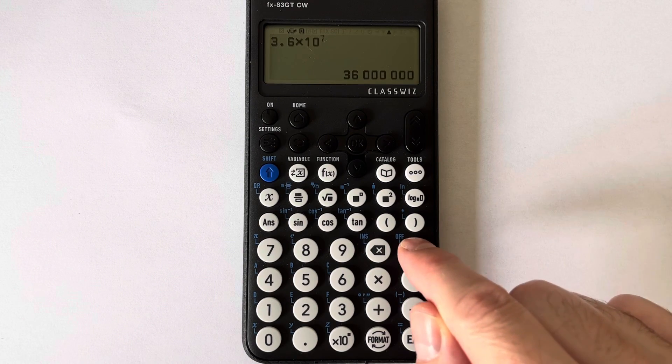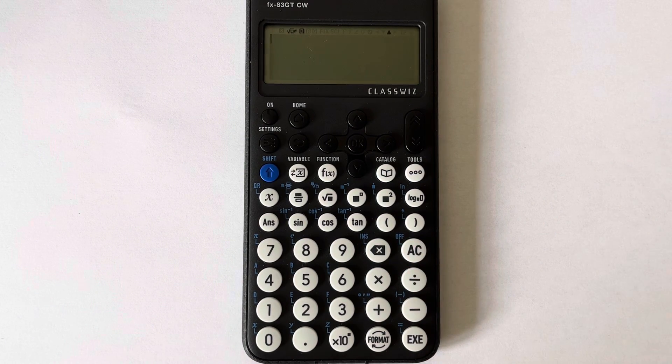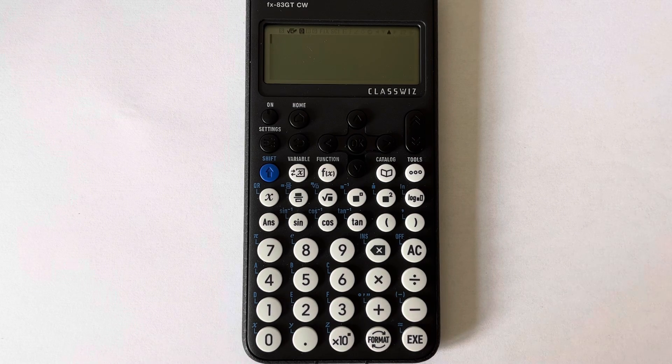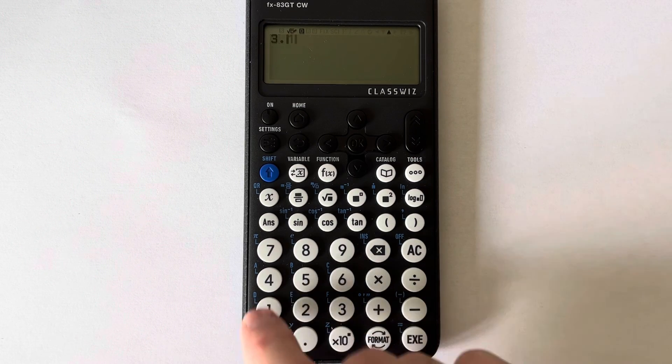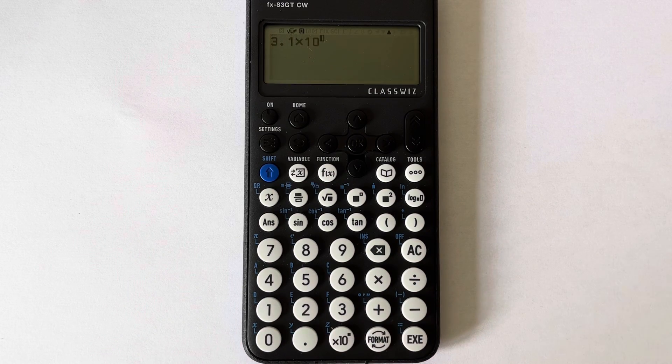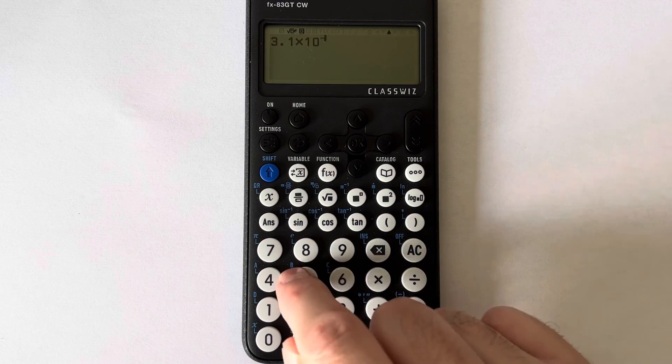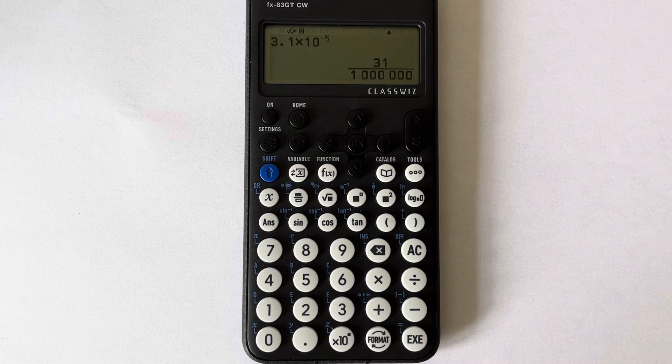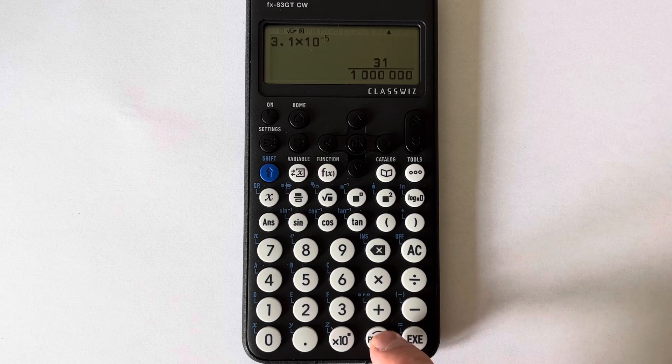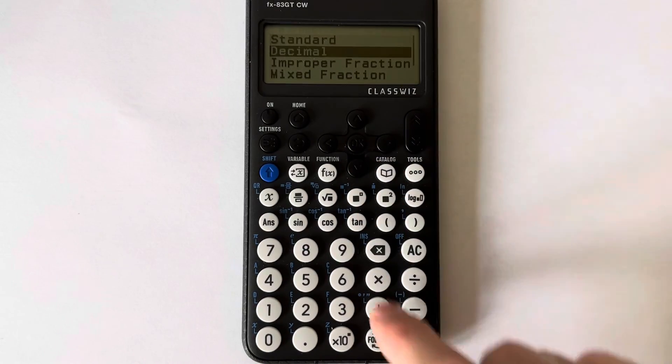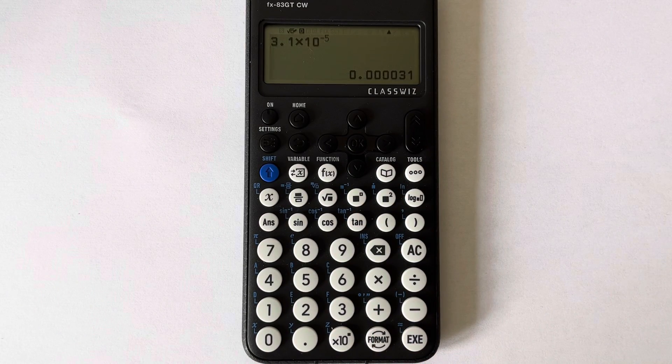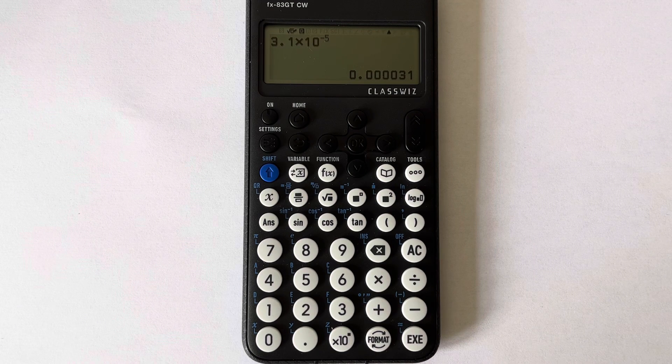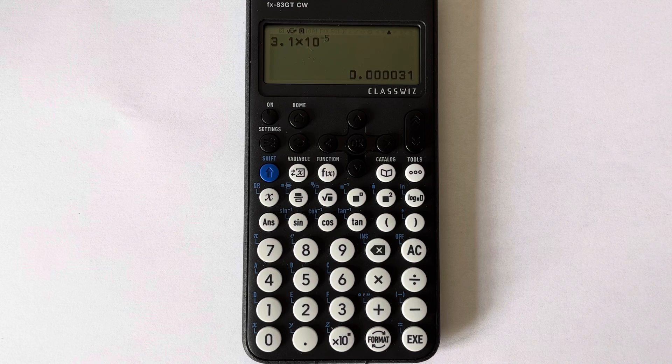Let's type in a small number this time. So let's do 3.1 times 10 to the minus 5. So 3.1 times 10, and then type in minus 5. It's given the answer as a fraction. If you want it as a decimal, press format, scroll it down, and press the equals key. So we get the answer 0.000031.